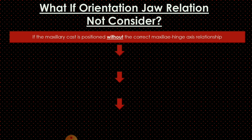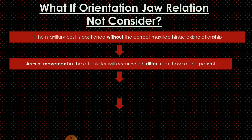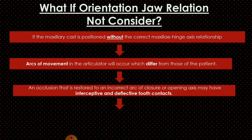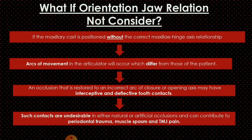What happens if orientation jaw relation is not considered? If the maxillary cast is positioned without recording the correct hinge axis relationship, the arcs of movement on the articulator will differ from those of the patient. Since every patient has a different arc and curve of the arch, failing to record the hinge axis means we cannot replicate the patient's arcs of movement on the articulator. This leads to interceptive and deflective tooth contacts, which further contribute to periodontal trauma, muscle spasm, and TMJ pain. Hence, orientation jaw relation is critically important for rehabilitating the patient's occlusion.